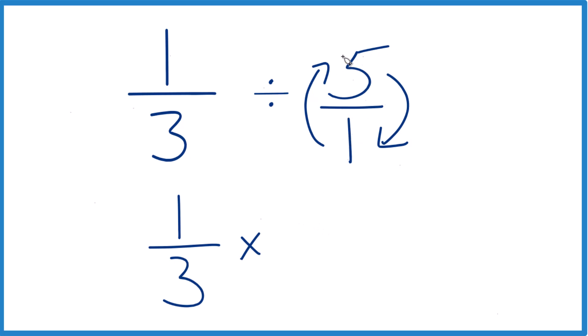So we have 1 on top, 5 on the bottom. That's 1/5, and now it's pretty easy to do the multiplication.